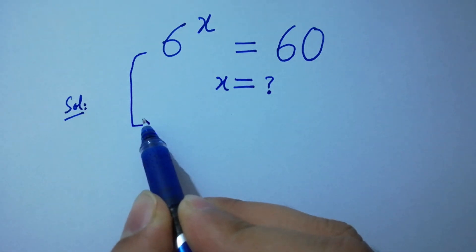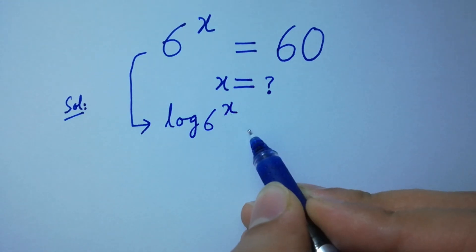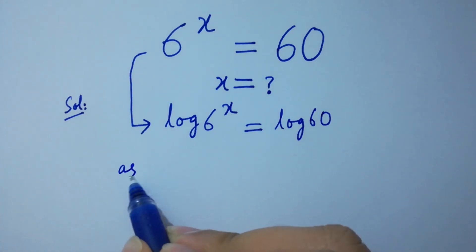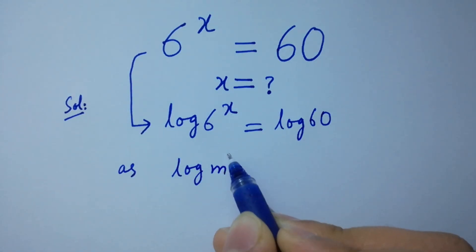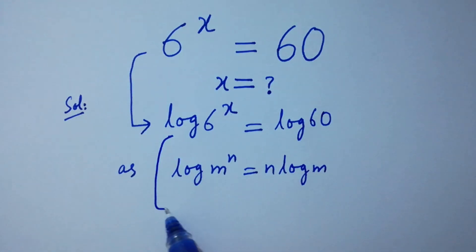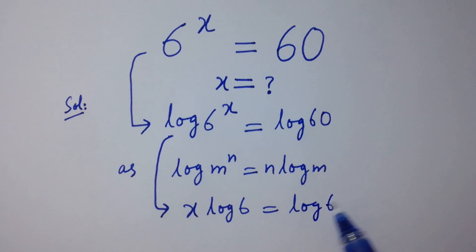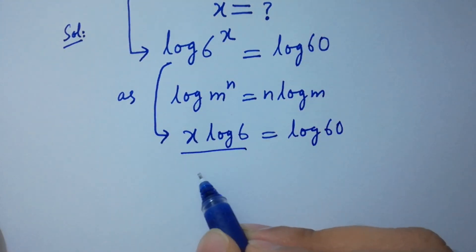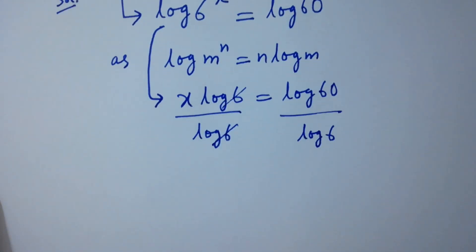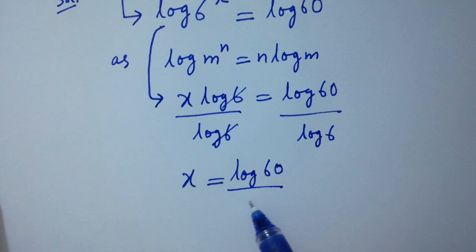First of all, take log on both sides: log 6 to the power x equals log 60. As we know, log m to the power n equals n log m, then it will be x log 6 equals log 60. Divide by log 6 on both sides — log 6 and log 6 cancel — so x equals log 60 over log 6.